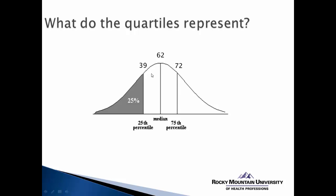Because the distribution of scores is a mirror image — it's symmetrical — we can make similar conclusions about the third quartile, in this case the score of 72. Because 72 is associated with the 75th percentile, 75% of scores are below 72, but 25% of scores are above it. The median, or second quartile, or 50th percentile: 50% of scores will be below 62, and 50% will be above 62.